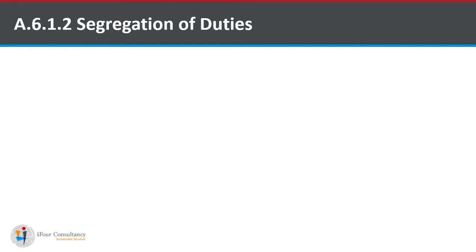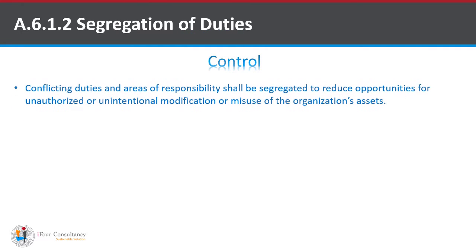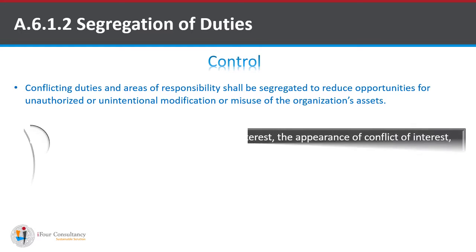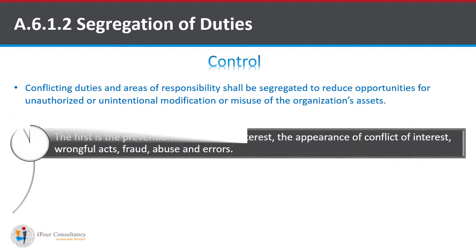A.6.1.2, i.e. segregation of duties. The control states that conflicting duties and areas of responsibilities shall be segregated to reduce opportunities for unauthorized or unintentional modification or misuse of the organization's assets.